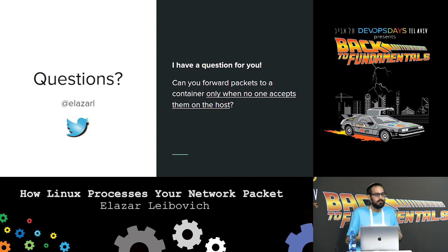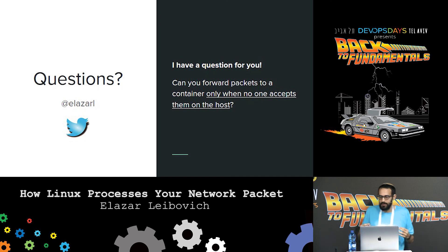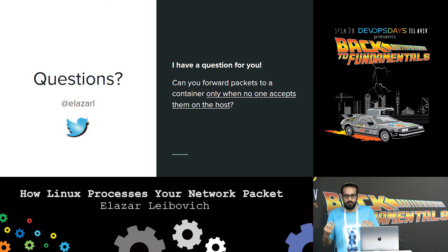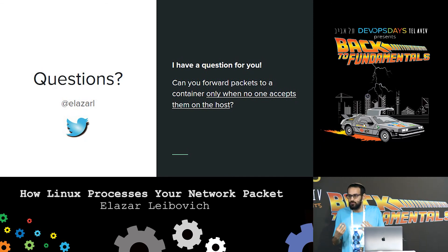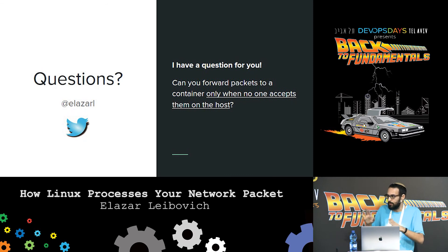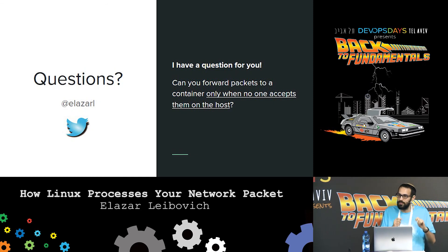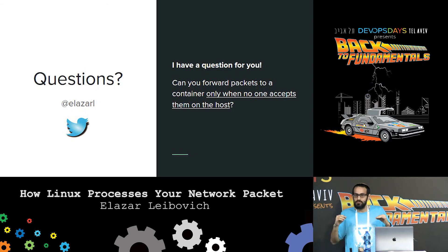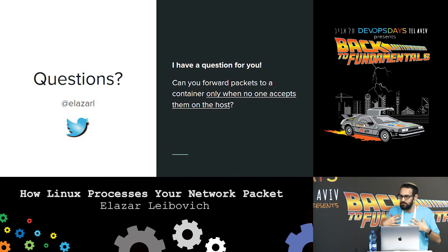Thank you very much. Before taking questions, I have a puzzle for you and I promise a prize to anyone who solves it and sends me the solution. I solved this problem, but when I solved it, every packet I received moved directly to the container. I want a solution that gives precedence to my laptop: if there's an application on my laptop waiting for packets on port 8000, the application would take them. If I kill this application and no one is waiting, I want the packet to move to the container. How do we do that? No external tools — just what's available by default on any Linux machine.